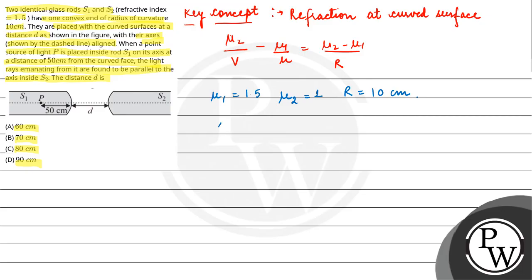So, 1 upon V minus 1.5 upon U. The object distance U is always negative. This equals 1 minus 1.5 upon radius of curvature 10 cm. Now you have to have minus 10 here because the first curved surface will be left, so this is negative.